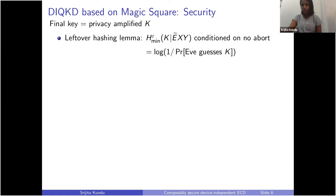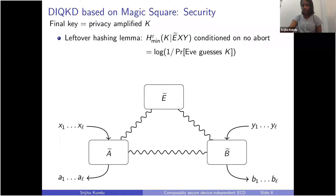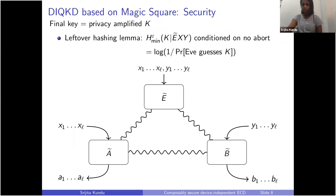The operational interpretation of this quantity: the min-entropy of K given Eve's system is equal to the log of the guessing probability of Eve given everything she has. We model Alice and Bob's L boxes as two big boxes. They have entangled states — ideally shared only with each other — but in reality they could be sharing a joint entangled state with the eavesdropper Eve. Eve's quantum system is called Ẽ. Eve has access to Alice and Bob's inputs and can treat those as her classical input since Alice and Bob's inputs have been communicated on the classical channel.